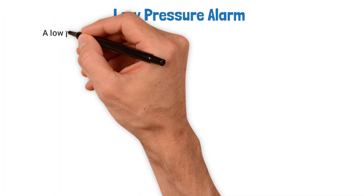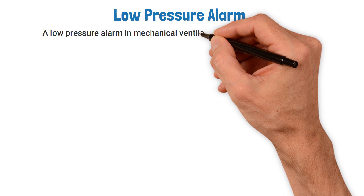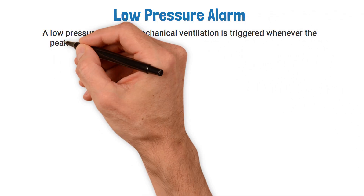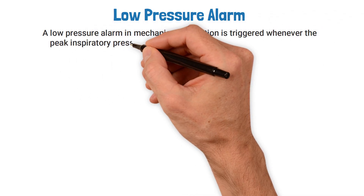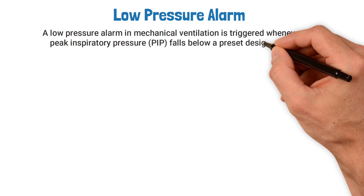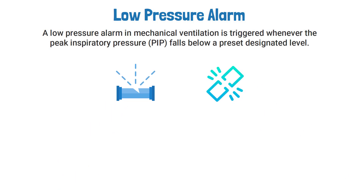A low pressure alarm in mechanical ventilation is triggered whenever the peak inspiratory pressure falls below a preset designated level. This most commonly occurs whenever there is a leak or disconnection in the system.